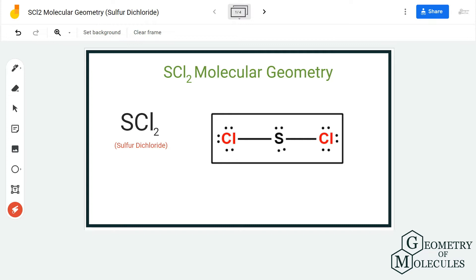This is the Lewis structure of SCL2, and you might wonder that it's a linear molecule because all the atoms are arranged in the same plane. But wait, you have to look at its 3D structure to understand it better.